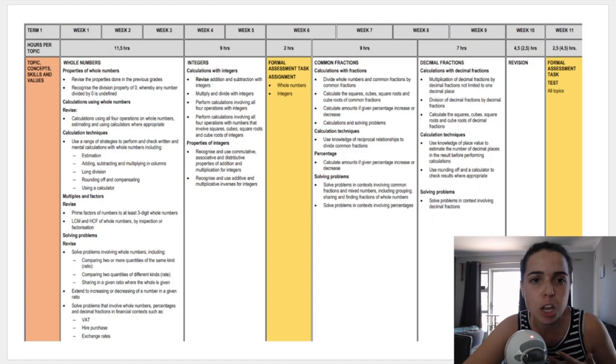But for example it starts off in week one with whole numbers, properties of whole numbers and then it goes on to calculations using whole numbers and then it goes on to different things like estimation, adding and subtraction and then eventually HCF, LCM. You learn a new method how to find the highest common factor and lowest common multiple in grade eight. So basically this is a more detailed plan.